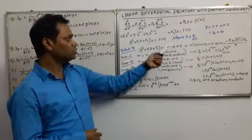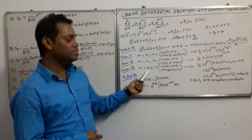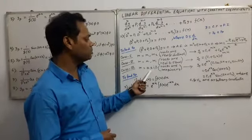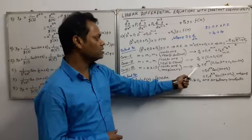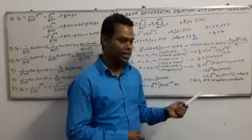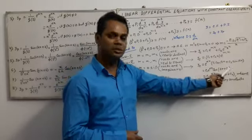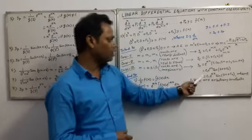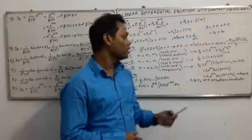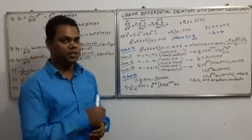If the roots of the equation are imaginary, then with roots α ± iβ, we find yc = e^(αx) * (c1*cos(βx) + c2*sin(βx)). Here, c1 and c2 are arbitrary constants.